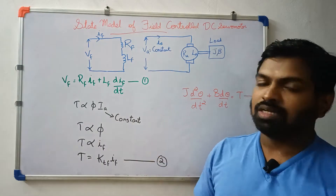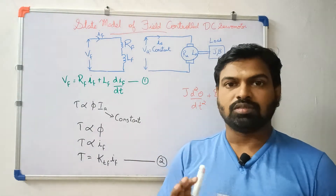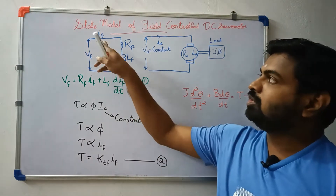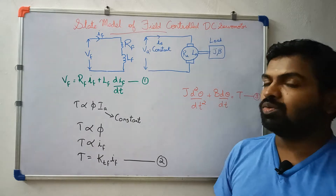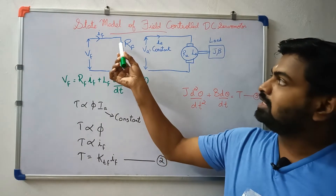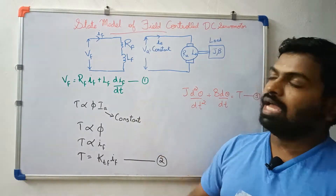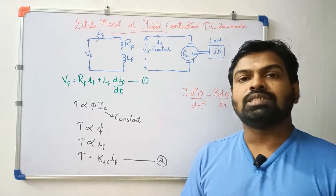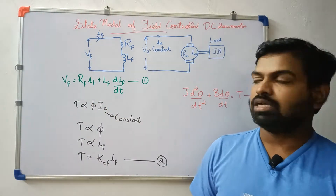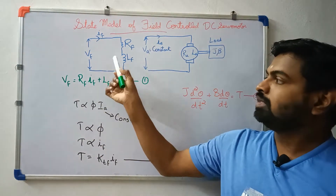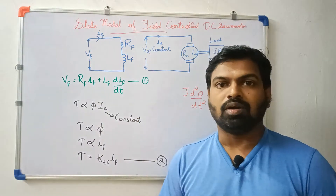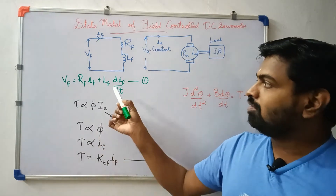Now we are going to talk about the armature and the first circuit. The armature resistance is Rf and Lf. We are going to talk about the equation.